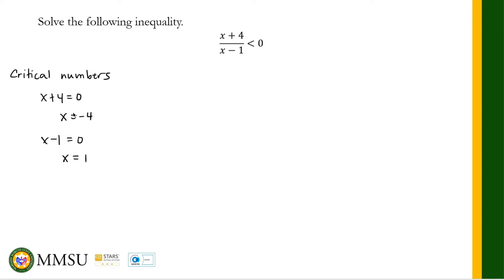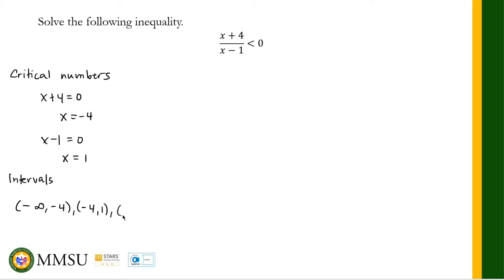If we plot these on a real number line, these two critical numbers divide our real number line into three intervals: from negative infinity to -4, from -4 to +1, and from +1 to positive infinity.